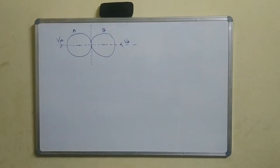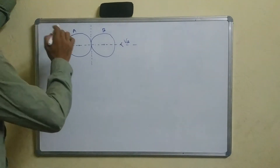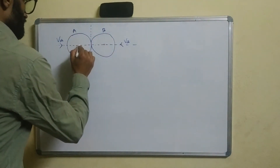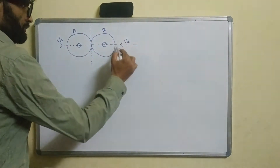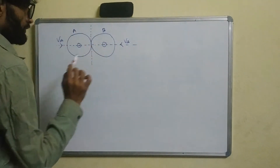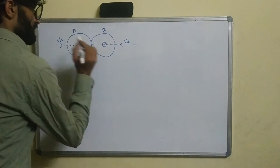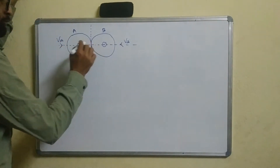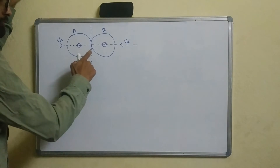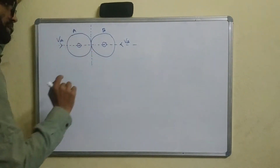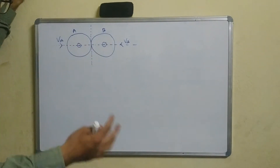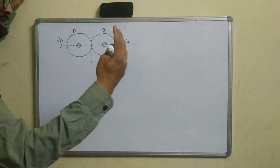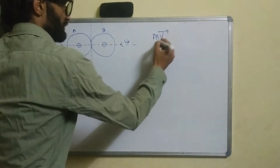This is direct central impact. Two objects A and B are travelling towards each other. The velocity of B shows ball A and the velocity of A. At the point of impact, the collision occurs in a short period of time and will instantly change the direction and the motion. Change in direction means the momentum will change.